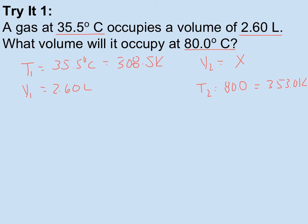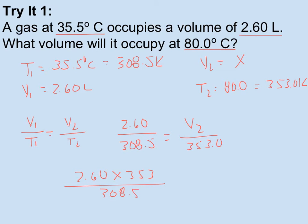So since I only have volume and temperature, I can use the individual gas law. V1 over T1 equals V2 over T2. And go ahead and plug in 2.60 over 308.5 should be equal to V2 or X over 353.0. And when I cross multiply and divide 2.60 times 353 divided by 308.5 is going to be equal to V2. I see that V2 has also had an increase to 311.92 or 311.9 and that would be liters.